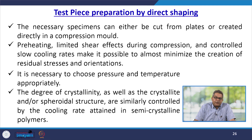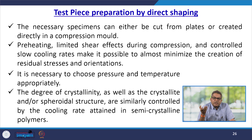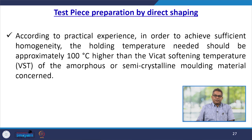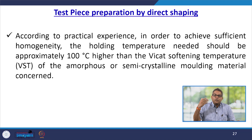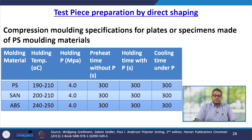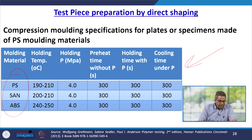Preheating, limited shear effect during compression, and controlled slow cooling rates make it possible to almost minimize the creation of residual stress and orientation. It is necessary to choose pressure and temperature accordingly. The degree of crystallinity as well as the crystallite or spherulite structure are similarly controlled by the cooling rate attained in semi-crystalline polymers. As per practical experience, to achieve sufficient homogeneity, the holding temperature should be approximately 100°C higher than the Vicat softening temperature of the amorphous or semi-crystalline molding material. A table shows compression molding specifications for various plates and specimens for polystyrene molding materials (PS and ABS), including holding temperature, holding pressure, preheat time, and holding time.